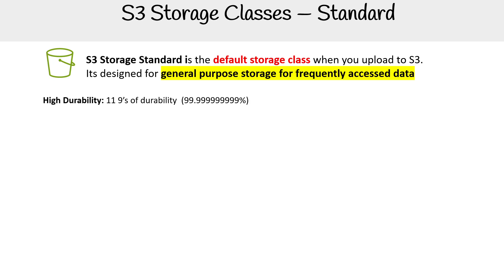It has a durability of 11 nines. All storage classes have a durability of 11 nines, which is interesting because some storage classes are one-zone — meaning they're in fewer locations — but they still have 11 nines. In terms of durability, AWS makes multiple copies even in a single AZ, and that's how it can achieve 11 nines of durability.